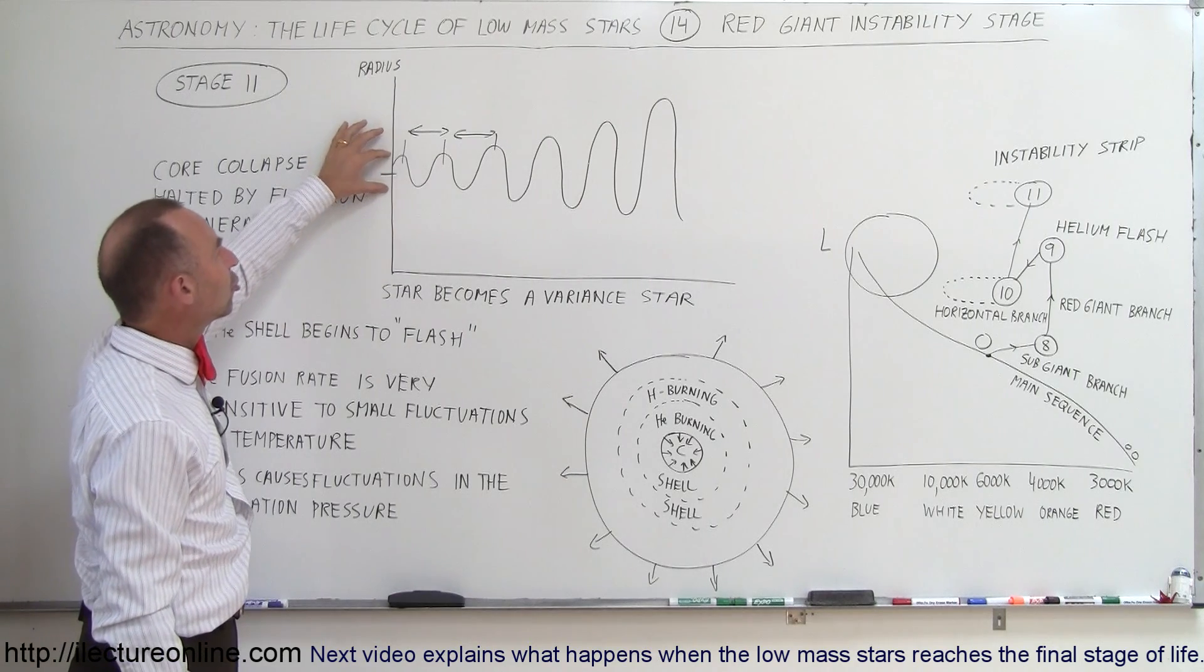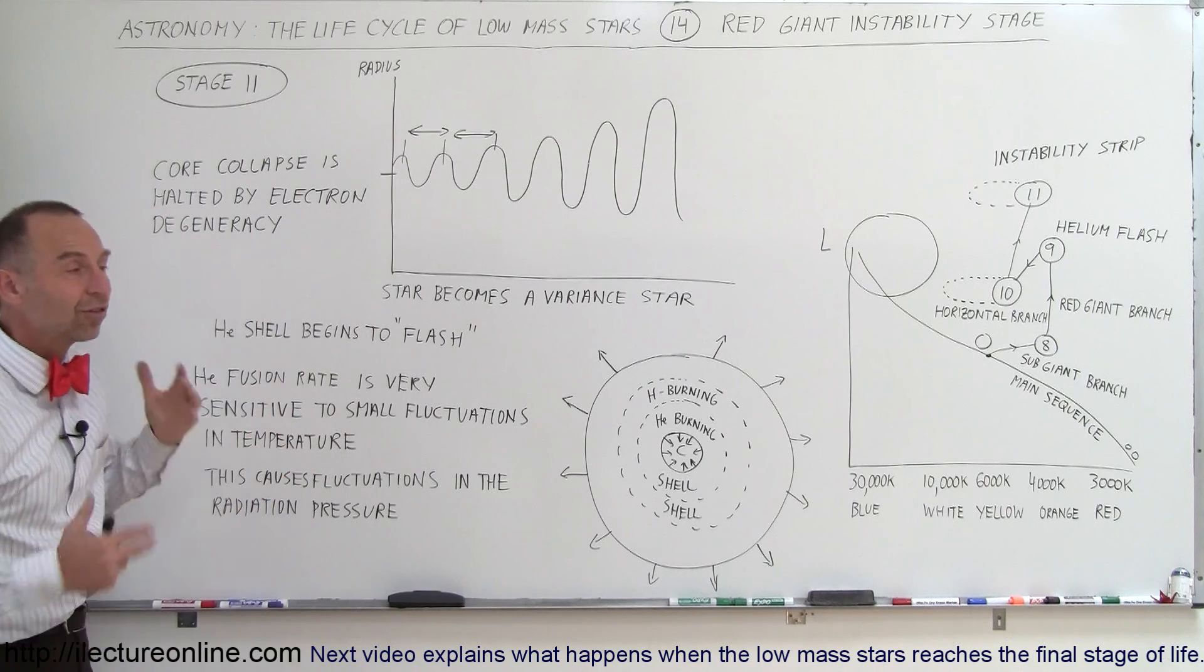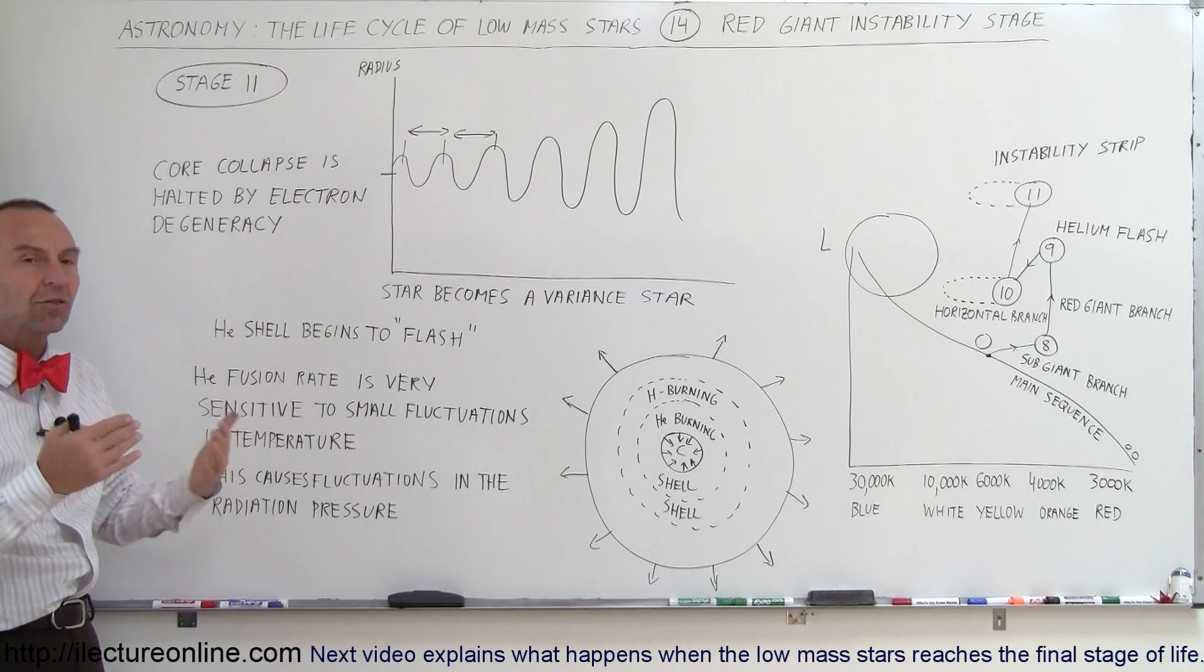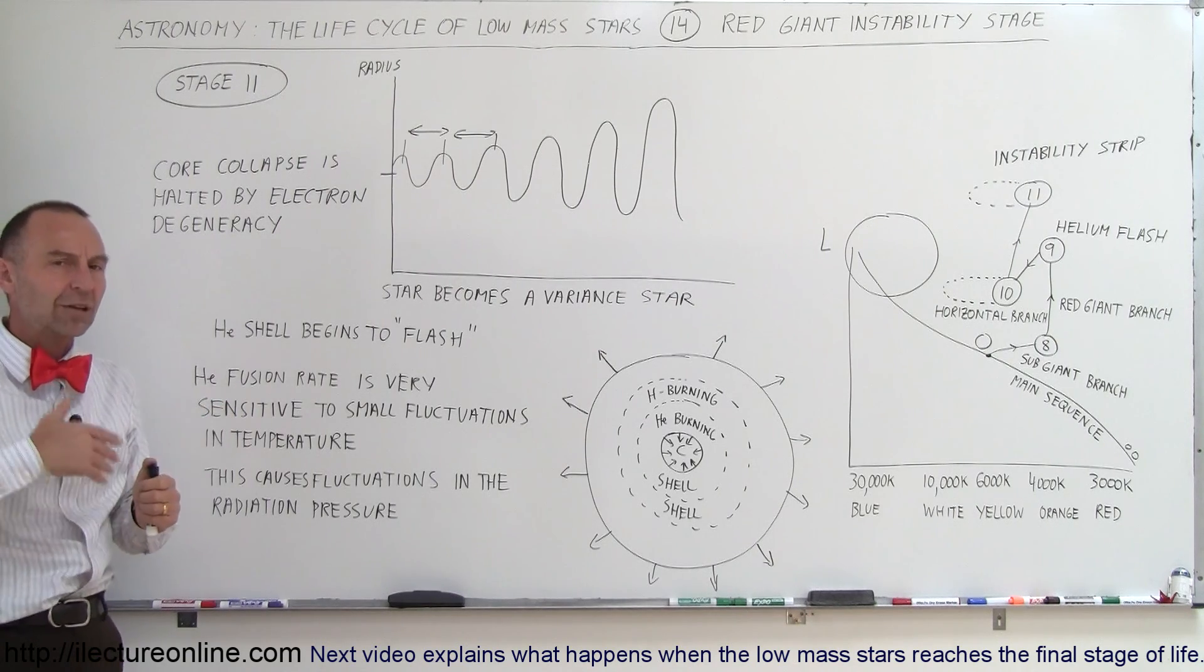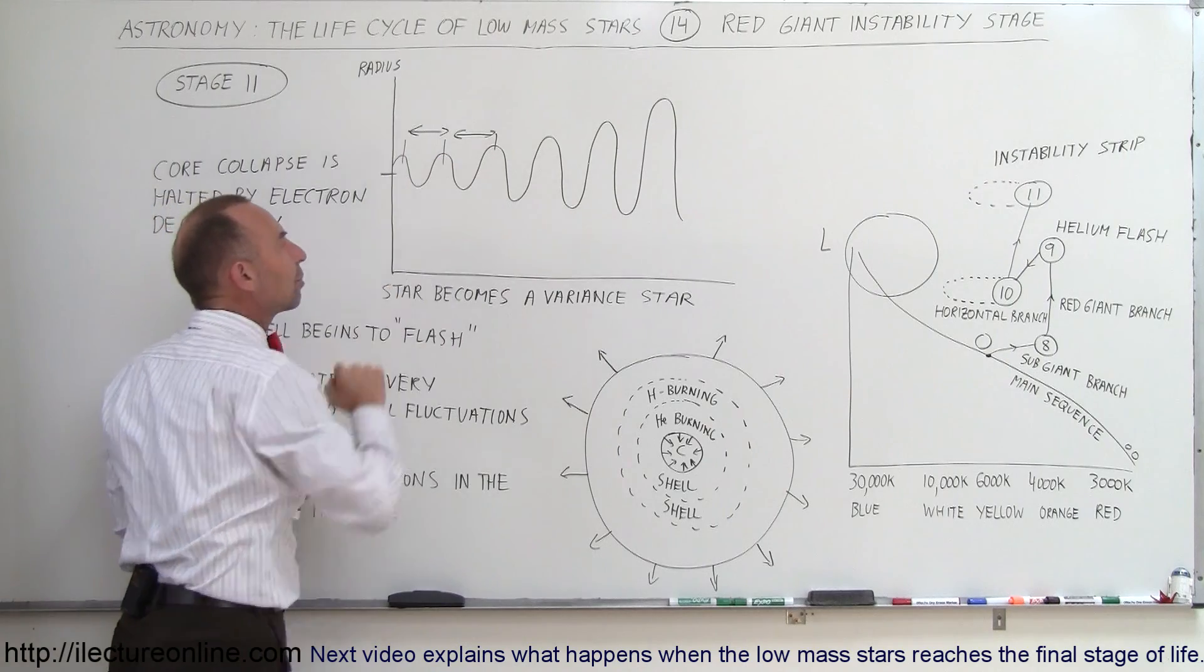Notice that the change in the radius of the star can be as much as five to ten percent of the size. Those huge fluctuations do make a very big difference in the luminosity, sometimes increasing by a factor of two or three from the dimmest to the brightest period.